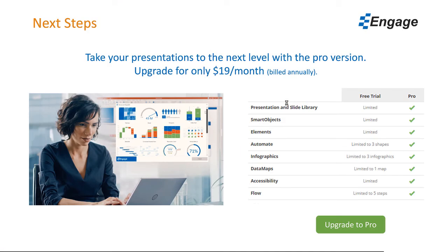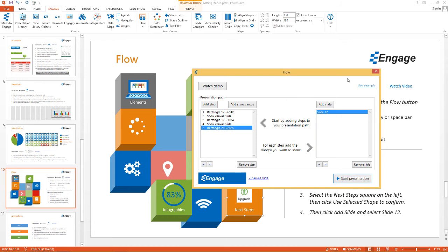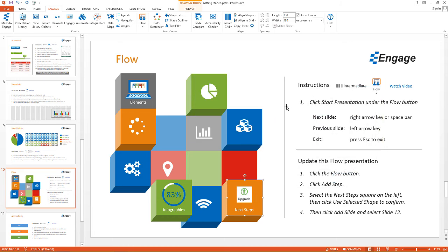Once I'm done, I can click the Escape button and close this dialog window. And that's how you can create a flow presentation with motion and zoom using Engage. Thank you.